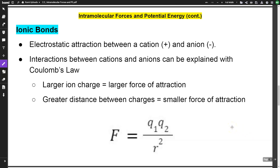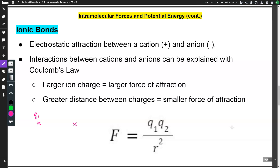An ionic bond occurs when you have electrostatic attraction between a positive cation and a negative anion — essentially a metal and a non-metal on the periodic table. Interactions between cations and anions can be explained with Coulomb's Law. In Coulomb's Law we're talking about the force between two particles: q1 is the charge of particle one, q2 is the charge of particle two, and r² is the distance between the particles.